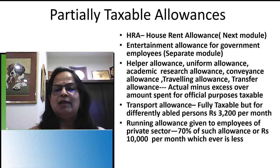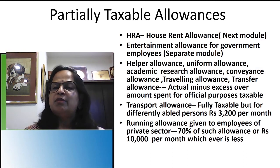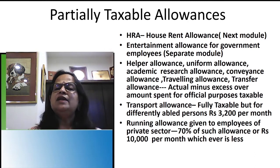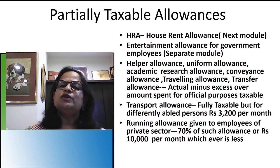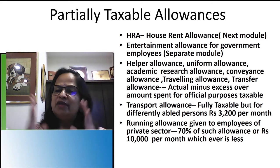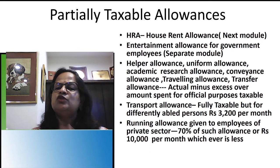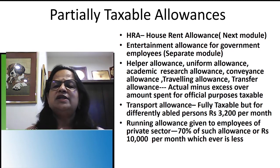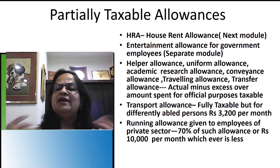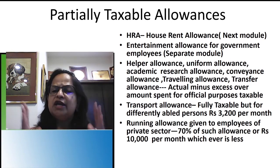The partially taxable allowances include: helper allowance (for domestic help), uniform allowance (for navy, army, police, fire force), academic research allowance (for university employees), conveyance allowance (for travel to work), and travelling allowance (for official travel to other cities). Transfer allowance, given when employees are transferred from one city to another, is also partially taxable. In all these cases, actual amount received minus actual expenditure determines the taxable portion.